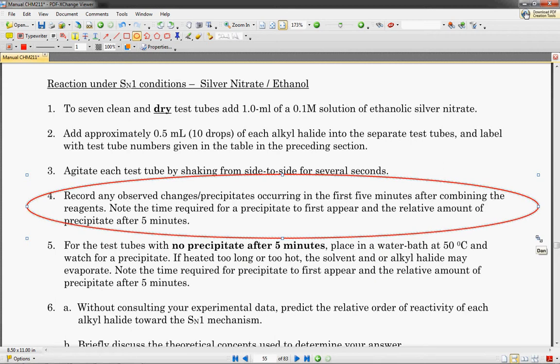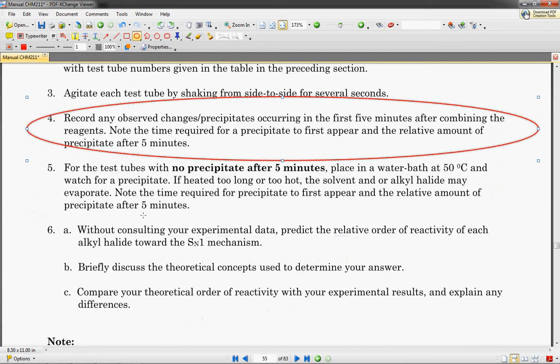Then you're going to add about ten drops of each of your halides into each one of these test tubes. You're going to mix them up for several seconds, record any precipitates occurring within the first five minutes. That will be one of the pieces of the puzzle to solve, to try to figure out which ones are going to come out first.